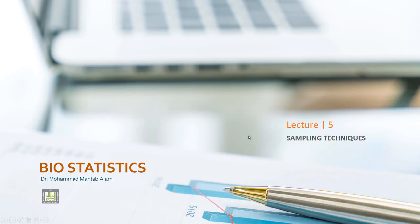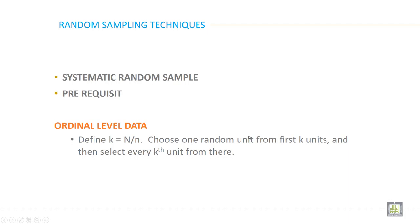So as we have discussed the first type, simple random sample, here we will start from the second one. The second type of random sampling is systematic random sample. This is the second type, second name of probability sample.